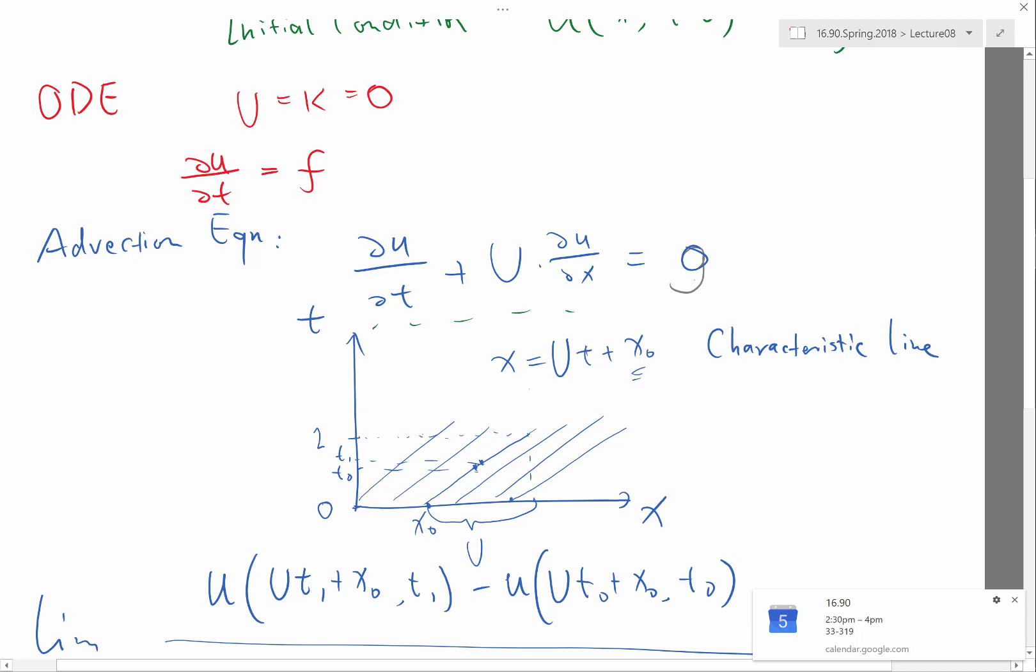If you want the solution here, for example, if I want the solution here, you only need to know the initial condition at this point and just solve along this line. All right. That's one way to solve numerically this partial differential equation is to figure out the characteristic lines and then solve along the characteristic line as if it is an ODE. All right. Any questions on that?